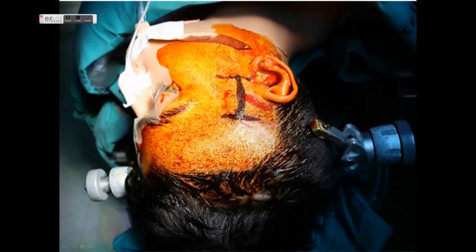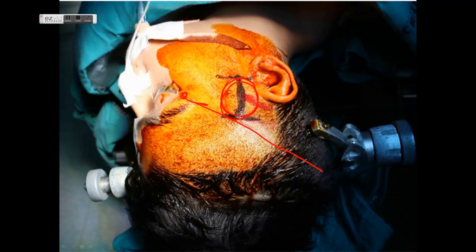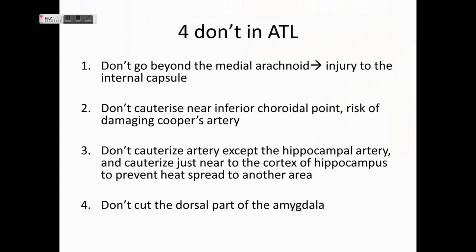For a standard anterior temporal lobectomy with amygdala hippocampectomy, a small curvilinear incision is given over the temporal region near the sylvian fissure. We perform a small temporal craniotomy and then resect the lateral temporal lobe followed by the medial temporal lobe structures. Important surgical principles include: not breaching the medial arachnoid; not cauterizing near the inferior choroidal point because the anterior choroidal artery lies there; cauterizing only the hippocampal artery and doing so close to the hippocampal cortex to prevent heat spread and thermal damage; and not cutting the dorsal part of the amygdala to avoid inadvertent damage to the globus pallidus.